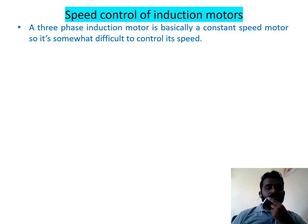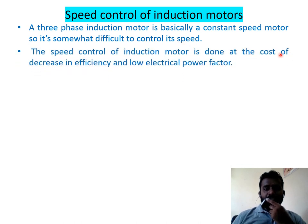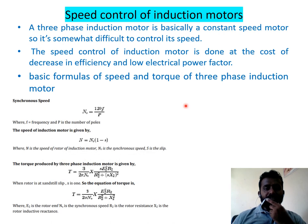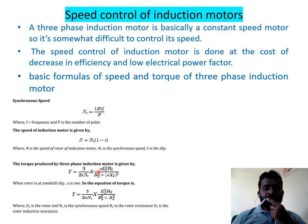A three-phase induction motor is basically a constant speed motor, so it is somewhat difficult to control its speed. The speed control of an induction motor is done at the cost of decrease in efficiency and low power factor. The synchronous speed is NS = 120F/P. The speed of the induction motor N = NS × (1 − S), where S is the slip. Torque is given as T = (3/2πN) × (S × E₂² × R2) / (R2² + S × X2²).